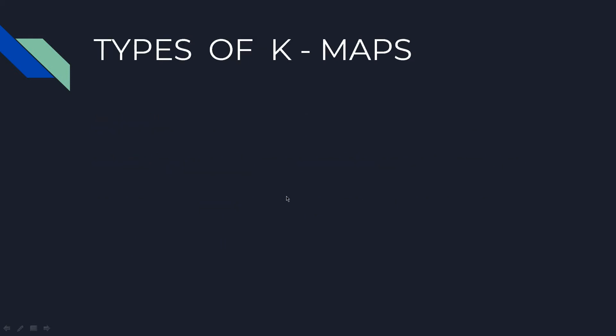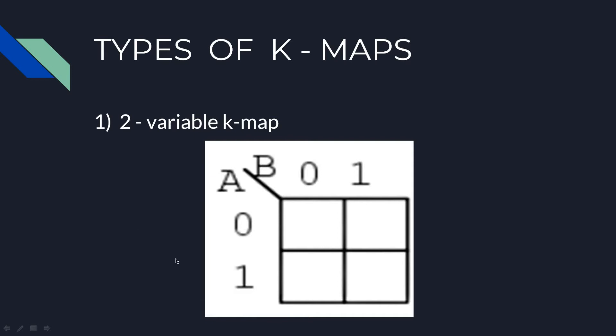There are 4 types of K-maps. The first one is the 2 variable K-map. This is how the 2 variable K-map looks. You can write A-bar and A instead of 0 and 1, and B-bar and B instead of 0 and 1 here.